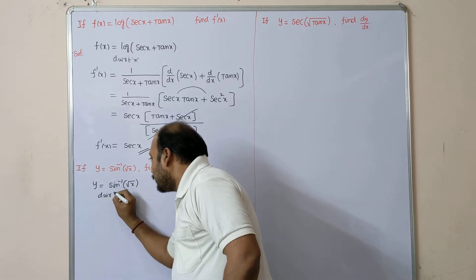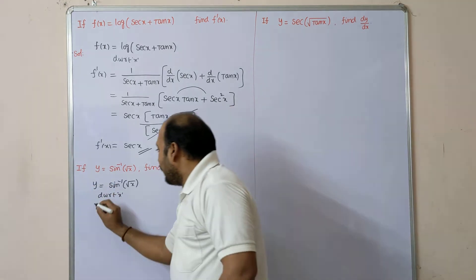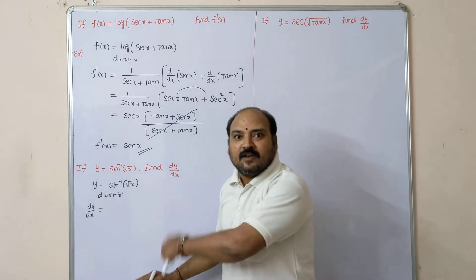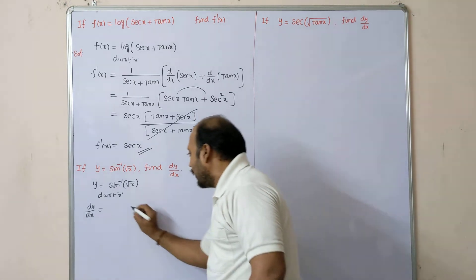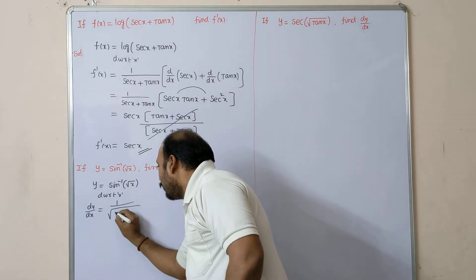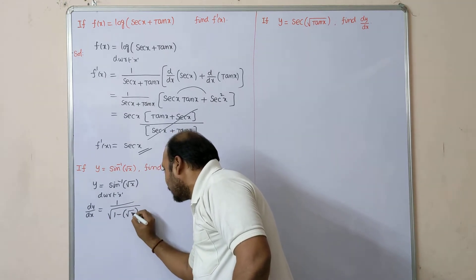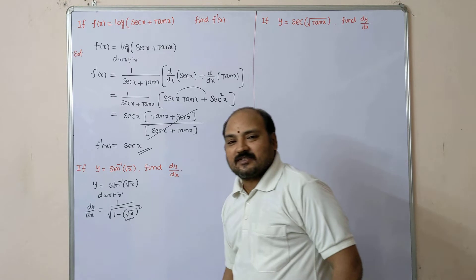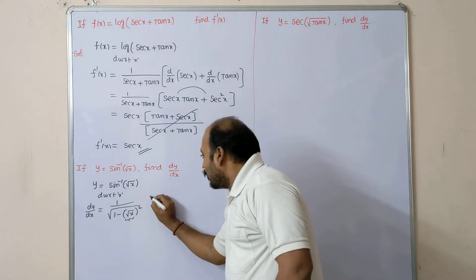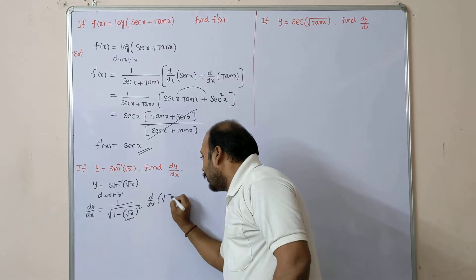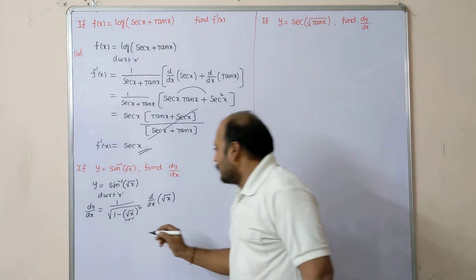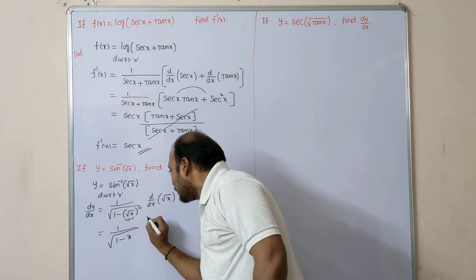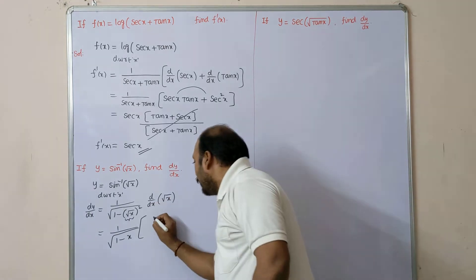Differentiate with respect to x. dy/dx = d/dx of sin⁻¹(x) = 1/√(1 − x²), where x is replaced by √x, giving 1/√(1 − (√x)²). We cannot stop there — whatever function is in place of x must also be differentiated. So multiply by d/dx of √x. We can simplify: 1/√(1 − x) into d/dx of √x, which is 1/(2√x).